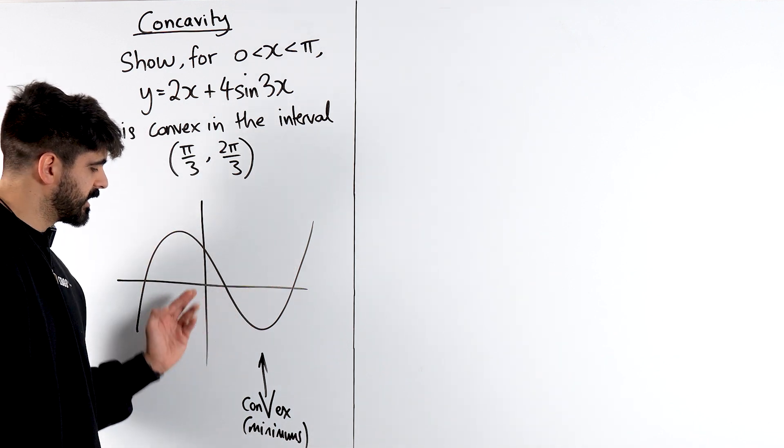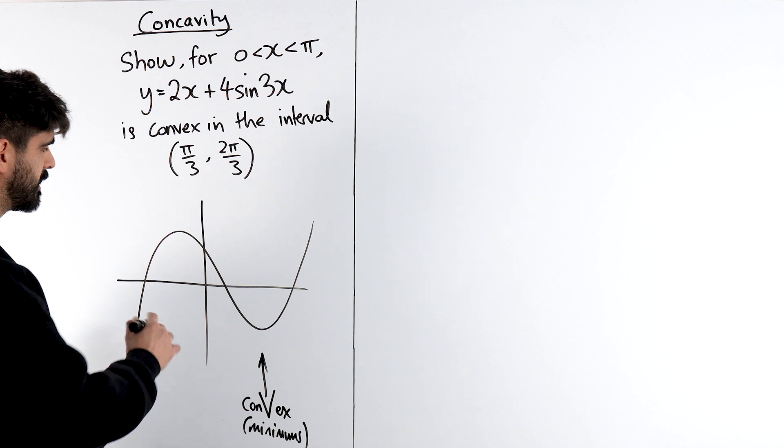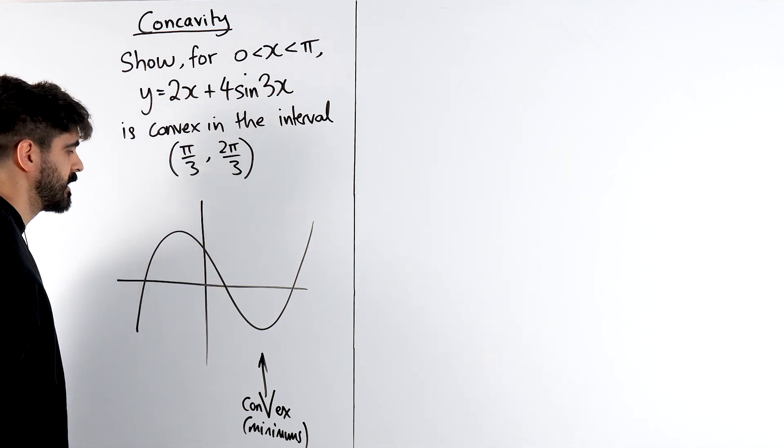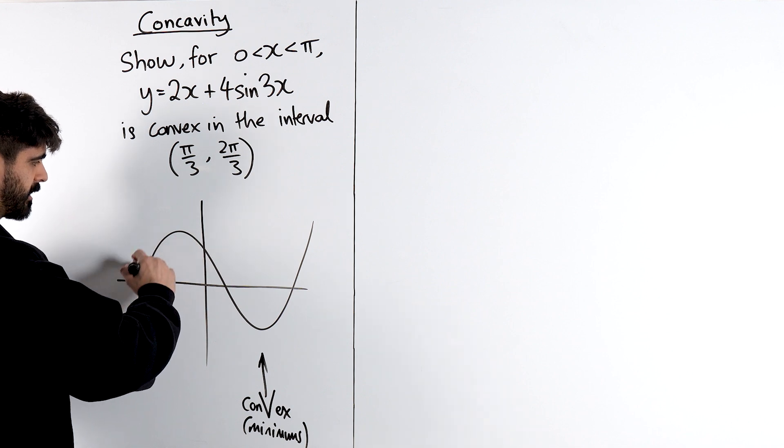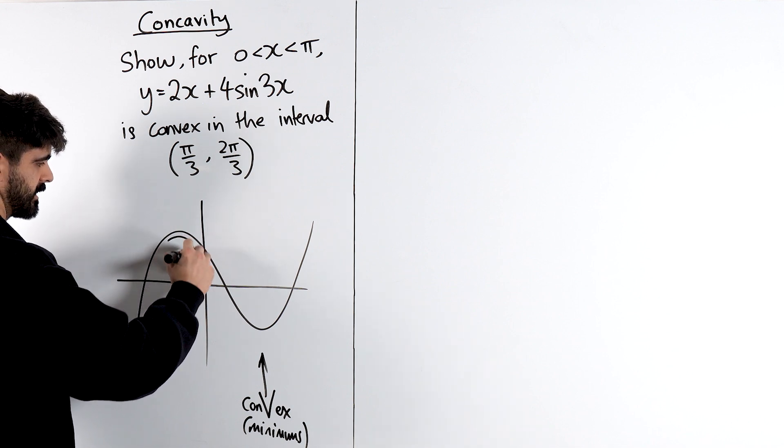So when you see minimums, we're thinking convex, which must mean the other side is concave. How do I remember that it's concave? I think of it like this. It's coming up, up, up, up, up, and then it's going to cave in.